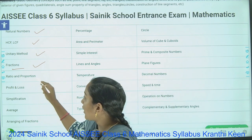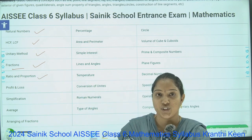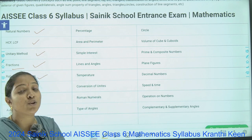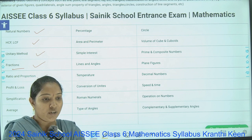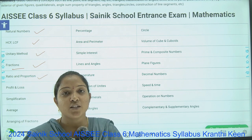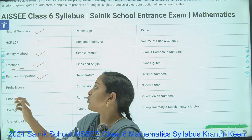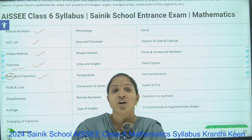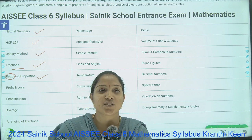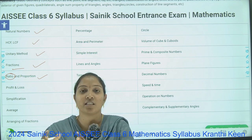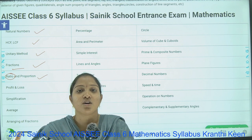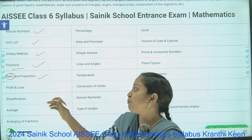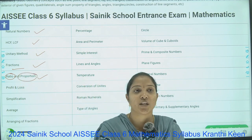Next is Ratio and Proportion. This topic is useful for commercial mathematics. For example, for comparing any two quantities we use ratio — like the cost of bananas to apples is in this ratio, so what is the cost of one? Such questions appear in Ratio. Proportion is simply making two ratios equal.